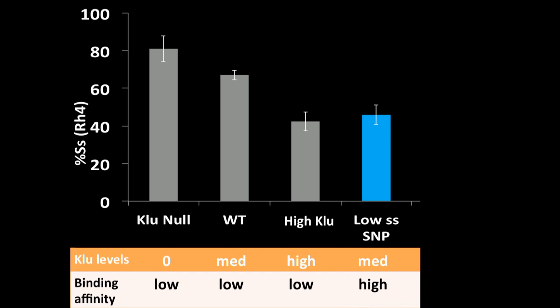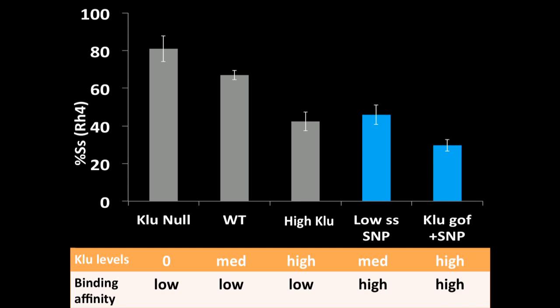In a low spineless SNP situation, we're back to medium levels of Clue but now high binding affinity. So we see a similar level of spineless on-off as the high Clue. And then finally, we did this experiment where we overexpressed Clue in the presence of the SNP. So now we have high Clue and high binding affinity, and this causes even further repression.